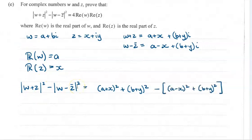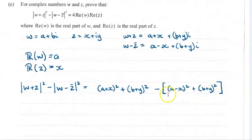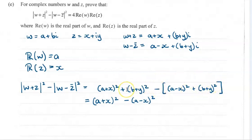Then we're going to take away what's happening for w minus z conjugate, and take the modulus of that — so the real part squared and imaginary part squared. I've put an extra set of brackets around there to make sure I didn't miss anything in this subtraction. If we cancel things out that are the same, b plus y squared takes away b plus y squared — those two things cancel. We're only left with the a plus x squared minus the a minus x squared.